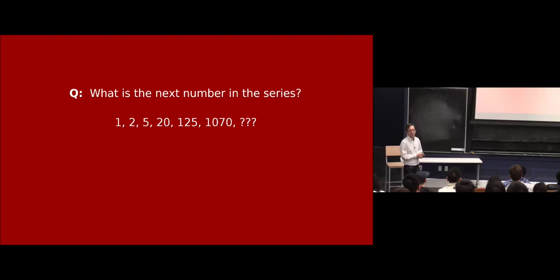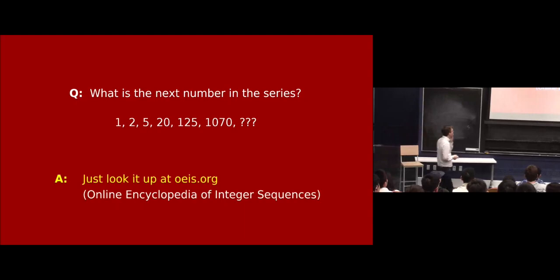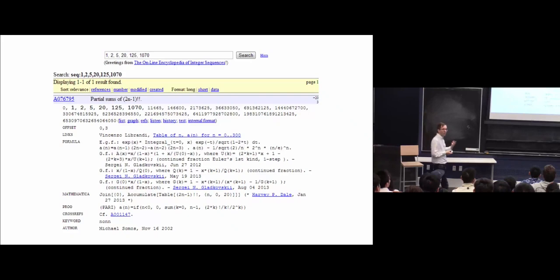And then maybe you get some answers like one, two, five, twenty, one hundred and twenty-five. How do you find the next number in this sequence? You do not use your brain. Yes. Thank you. What is your name? Isaac. Yes. There's a website for this. The online encyclopedia of integer sequences.